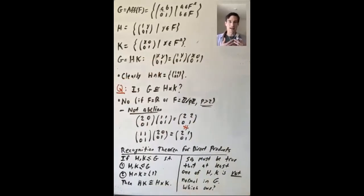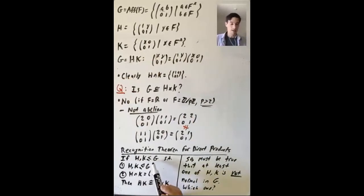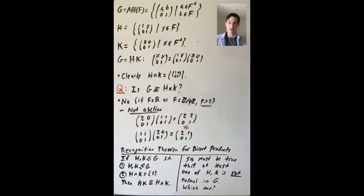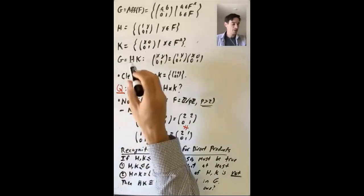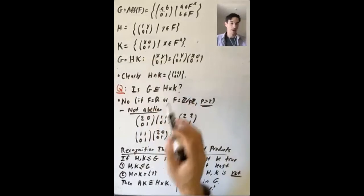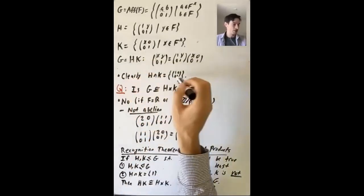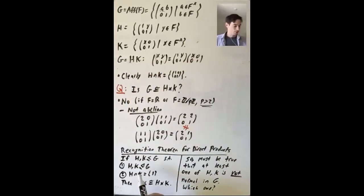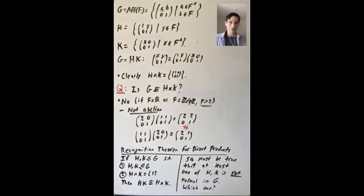Let's step back and recall the recognition theorem for direct products: if H and K are subgroups of G such that both H and K are normal in G and their intersection is trivial, then the internal direct product HK is isomorphic to H × K. Here G equals HK, G is not isomorphic to H × K, and H ∩ K is trivial. So it must be that at least one of H and K is not normal in G.